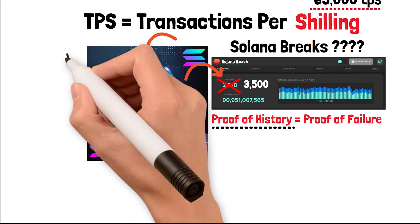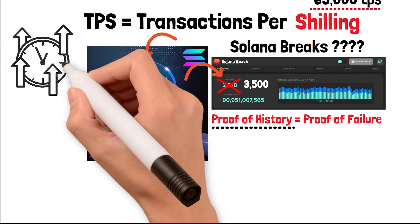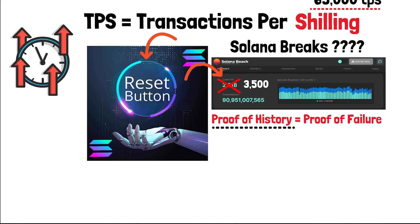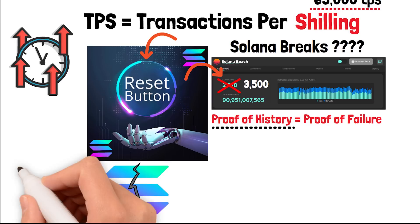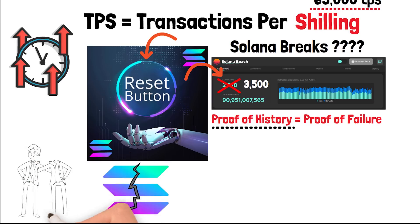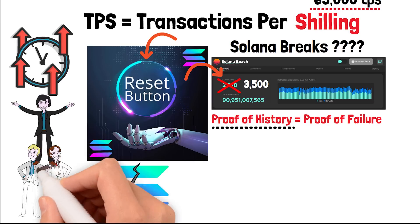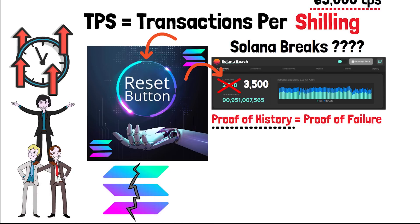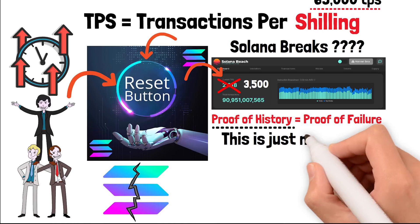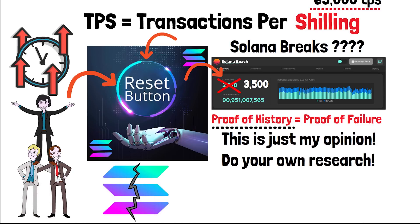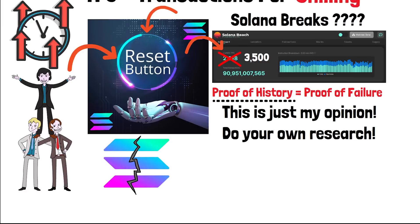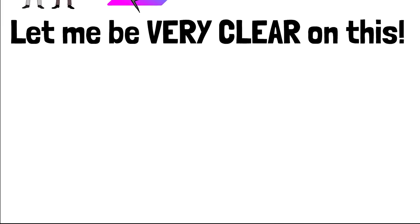In my opinion, this is why the Solana blockchain breaks every time their block explorer shows more than 3,500 transactions per second. Solana tried creating a new consensus algorithm called Proof of History that pre-timestamps transactions before they enter the mempool, and every time the blockchain gets busy the network starts to fragment and hard fork itself — requiring a team of people to shut down block production and restart the blockchain.